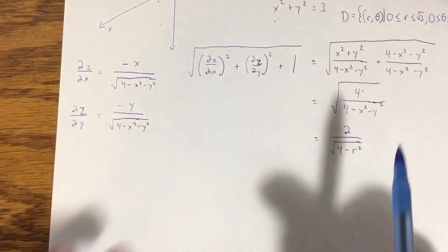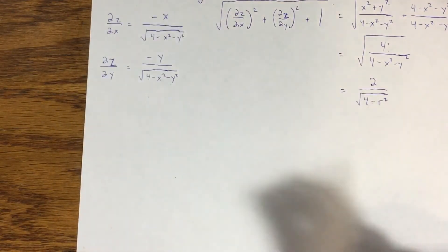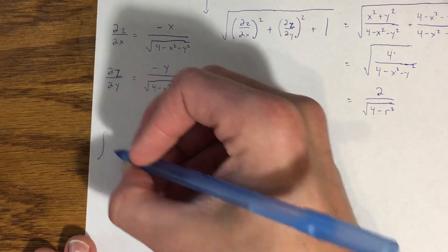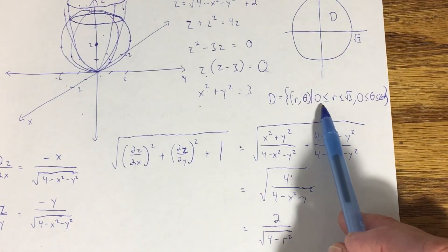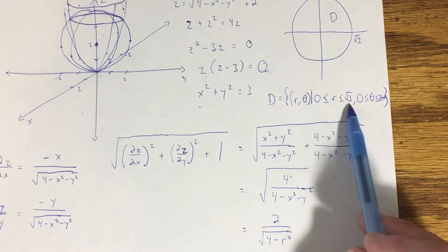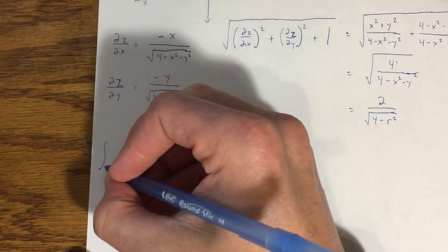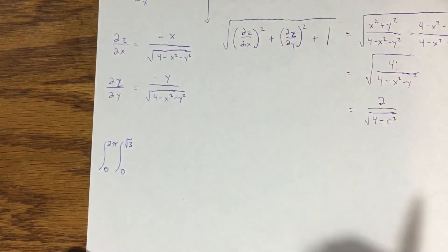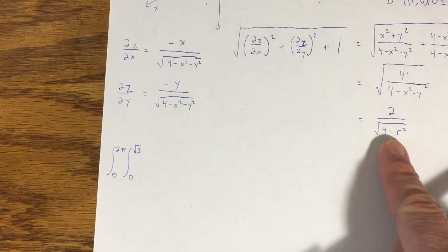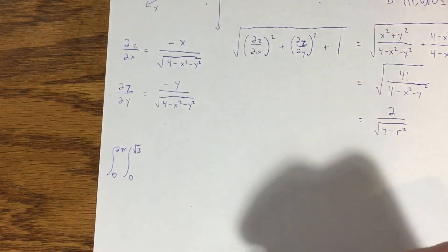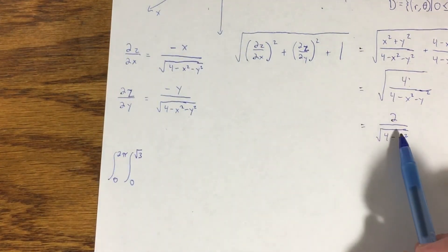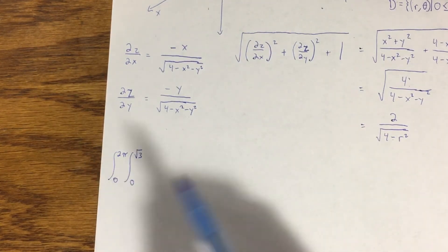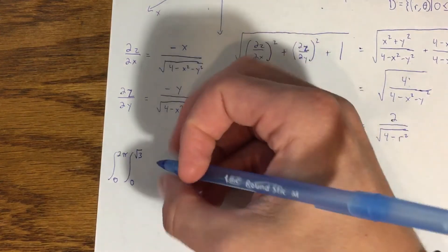With that said, we can now go to our surface area formula and use this in polar coordinates. My surface area formula is a double integral, but this time we're using polar coordinates. The limits of integration are given in this set D right here, so theta goes from 0 to 2π, r goes from 0 to √3. This is what my integrand simplified to. But remember, because I'm switching to polar coordinates, my dA in the double integral is going to become r dr dθ.